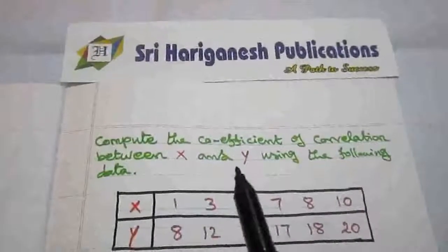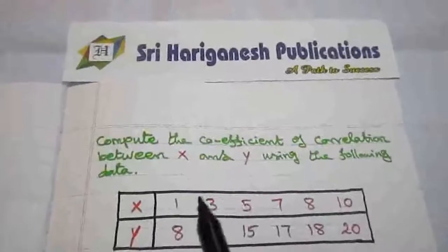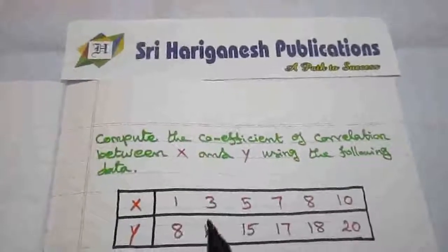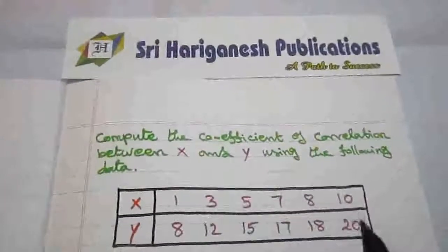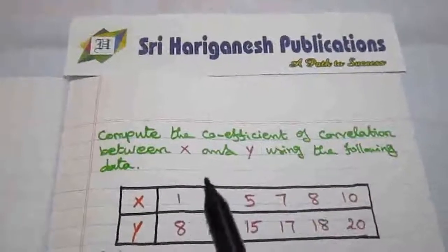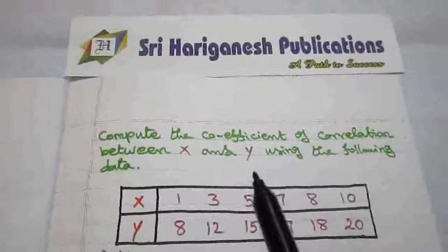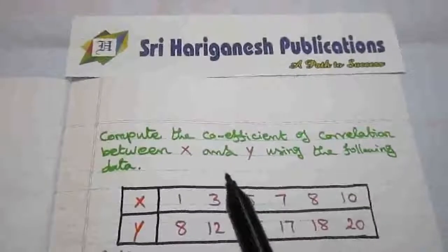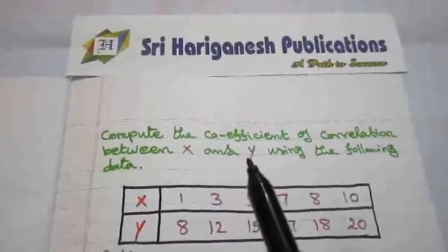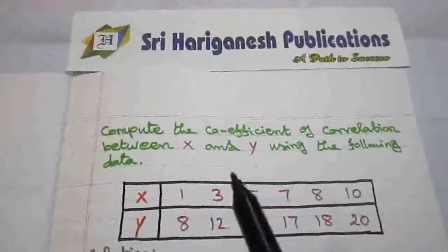Here, x and y are random variables having only a countable number of values. Therefore, x and y are discrete random variables, so we have to find the correlation coefficient between two discrete random variables.